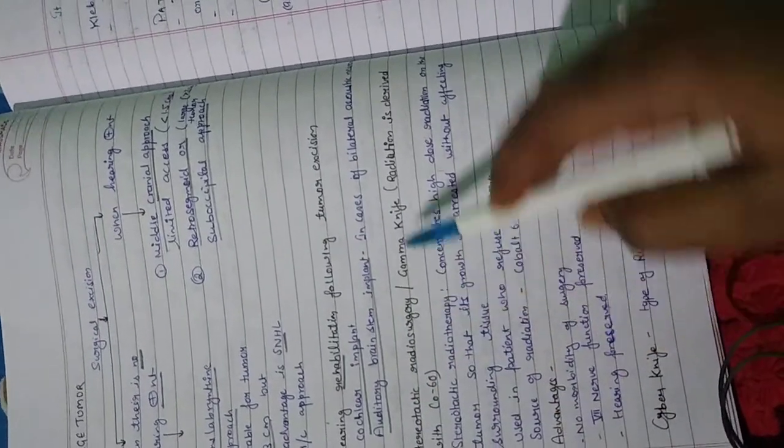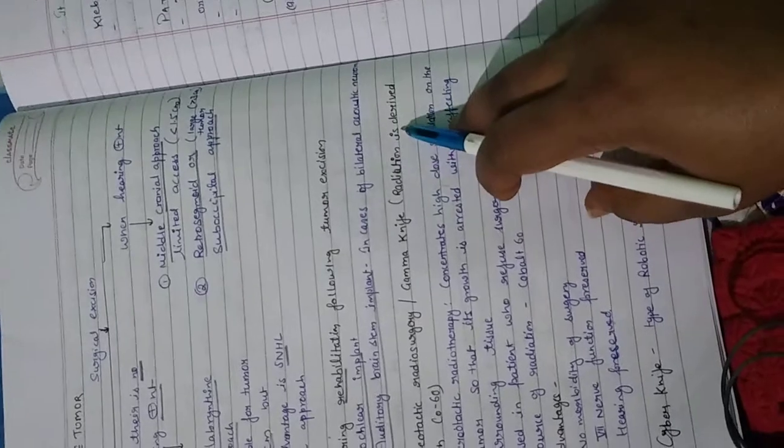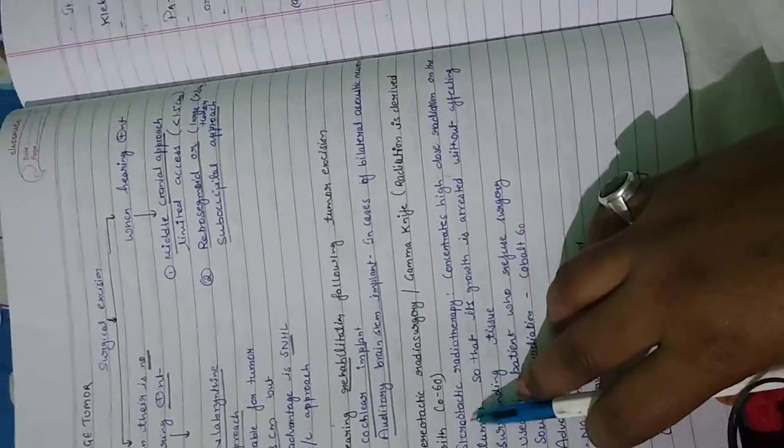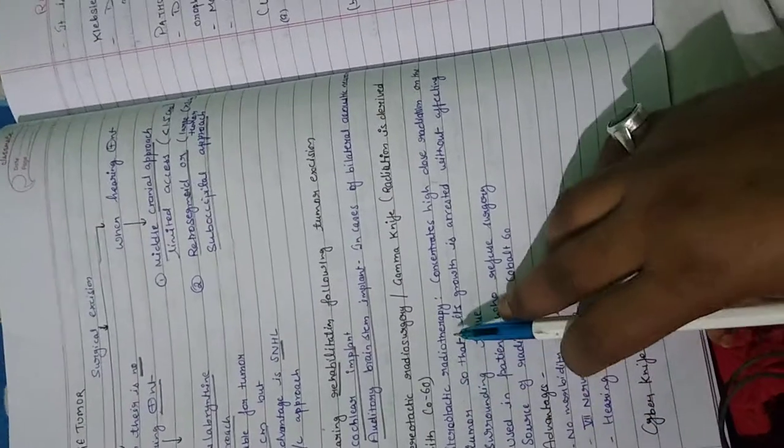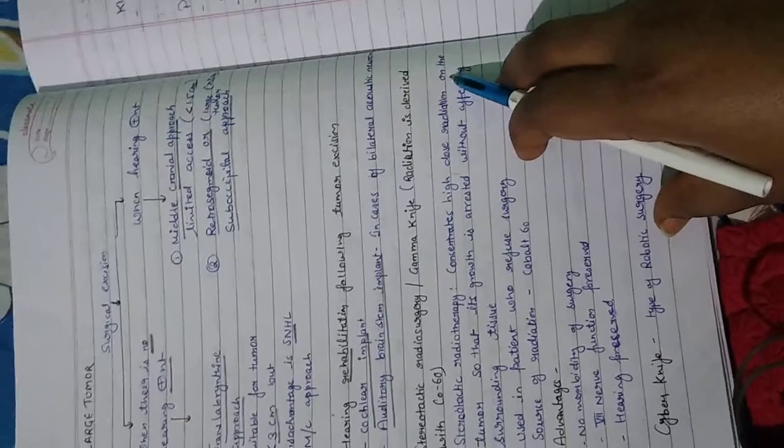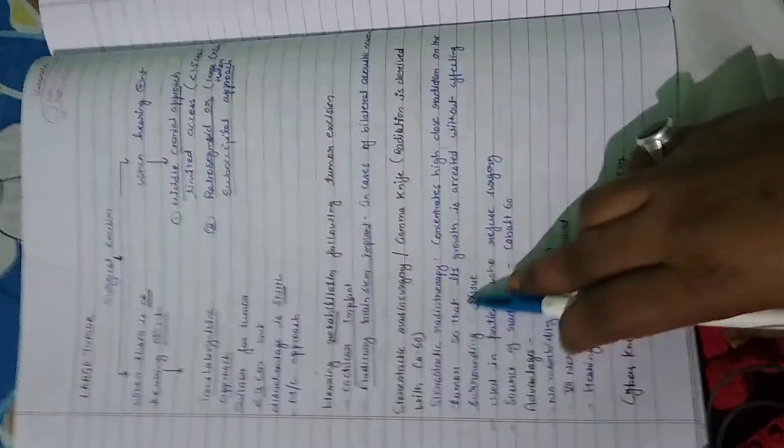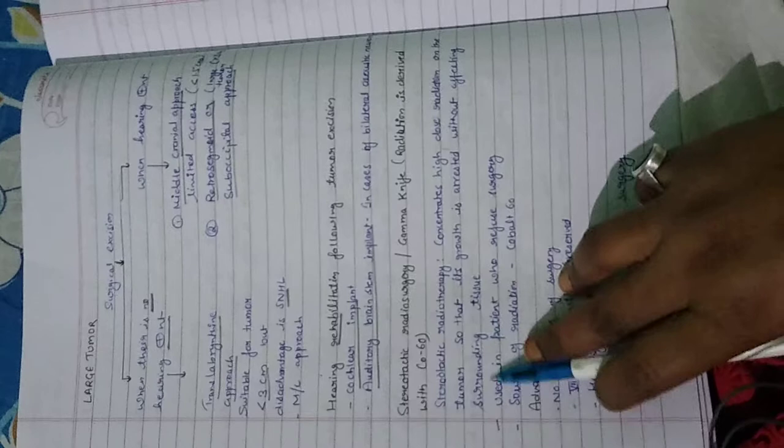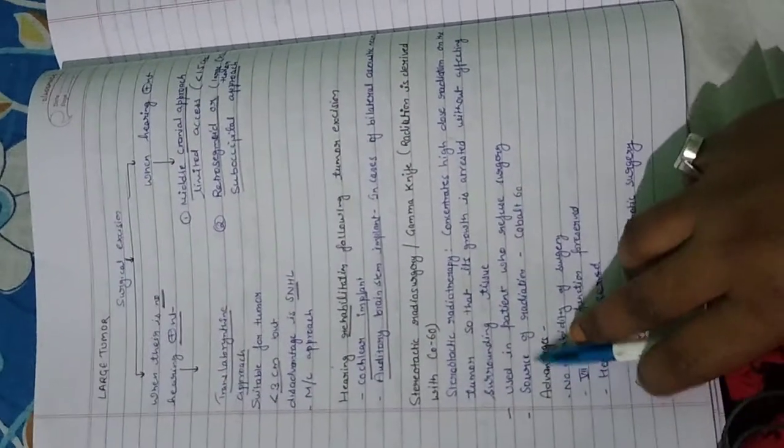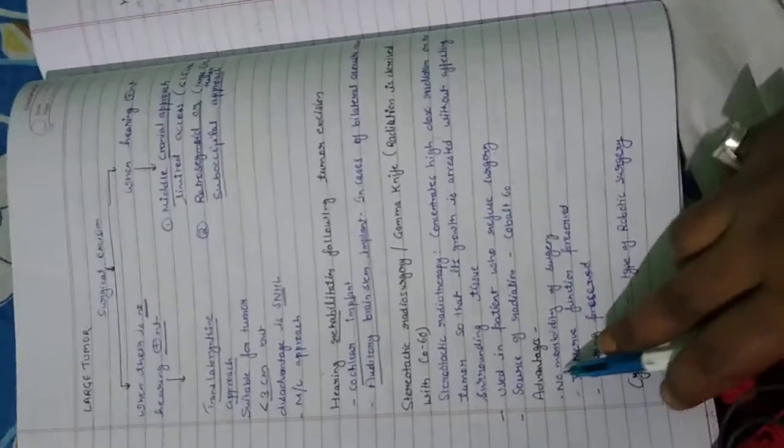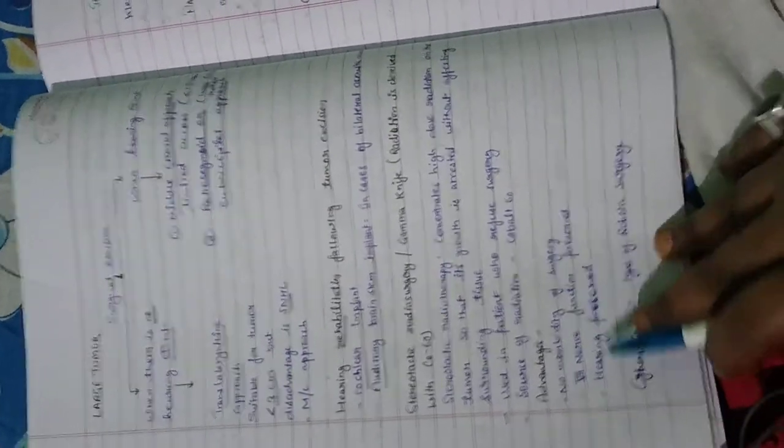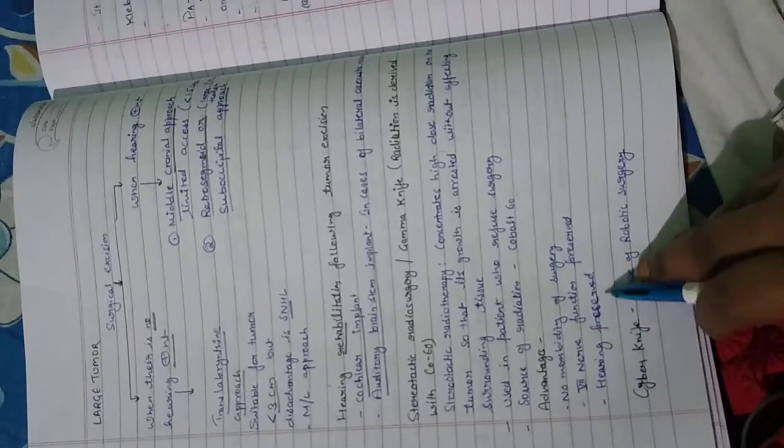Stereotactic radiosurgery: Gamma knife radiation is directed with cobalt-60. Stereotactic radiotherapy concentrates high-dose radiation on the tumor so its growth is arrested without affecting surrounding tissue. Used in patients who refuse surgery. Source of radiation is cobalt-60. Advantages: no morbidity of surgery, 7th nerve function is preserved, hearing preserves.